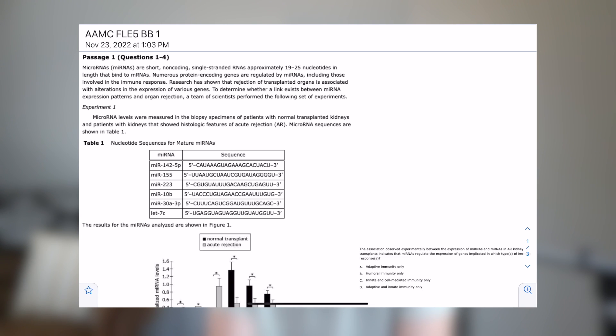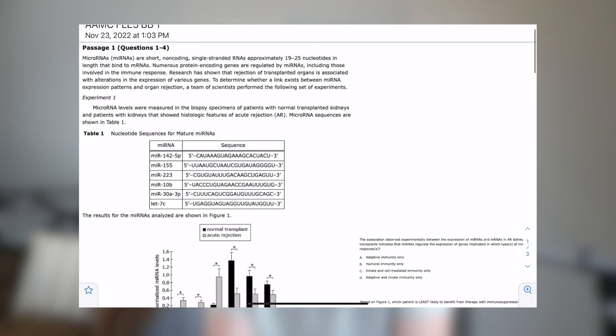Welcome back to another passage review for the FL5, the FL3 I've seen it called. It's the new AAMC practice exam that we're breaking down on this channel. Today's passage is going to be the first passage in the biology and biochemistry section, passage number one. We're going to get started because it's a quick one on one of my favorite sciences in the basic science department, and that is the immune system.